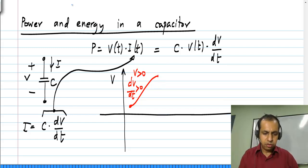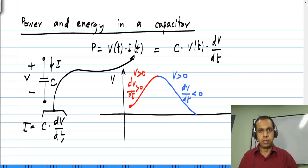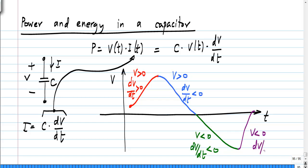The other way round is also possible. If the voltage is positive but its time derivative is negative, the product will be negative and the capacitor will be delivering power — it is absorbing negative power. Then where V is negative and the time derivative is also negative, the product is positive and the capacitor is again absorbing power. Finally, where V is negative but the derivative is positive, the capacitor is delivering power.